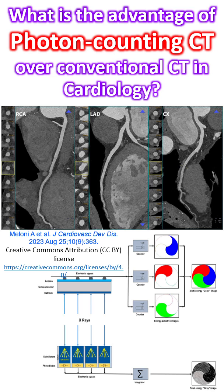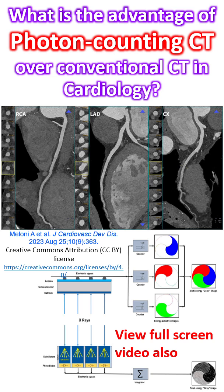Conventional CT uses a two-step indirect conversion process of detection. Photons in the X-ray beam are transformed by a scintillator to visible light. These secondary photons are absorbed by an array of photodiodes and converted to electrical signals. Thus, by integrating the energy of all X-ray photons over a specific time frame, the conventional CT detector loses the ability to retain the energy information of individual X-ray photons.